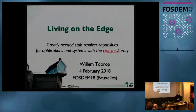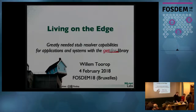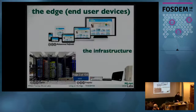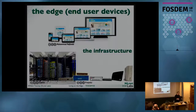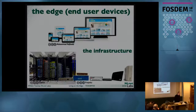We'll also cover some of the hurdles it has to take, and at the end, the infrastructural position of the stub resolver and how it perhaps should change. By 'living on the edge,' I mean the edge of the network — end user devices opposed to the infrastructure, the services users are using, and also the middle boxes which are hampering users' traffic and the infrastructure that is eavesdropping on users.